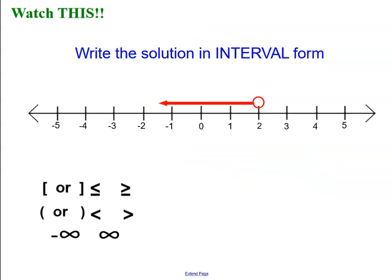How about without the inequality written? Can you write the interval notation form for this graph? It looks like my lowest value is an arrow. That's negative infinity. And my largest value is a 2, and it's an open circle.